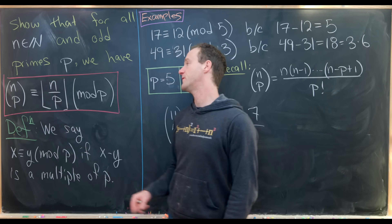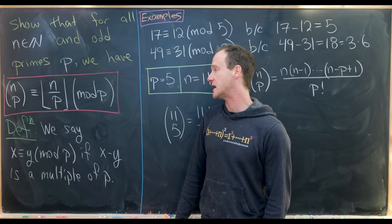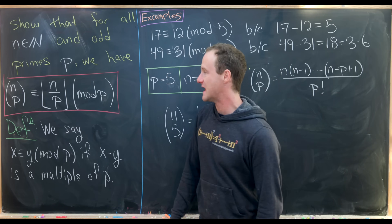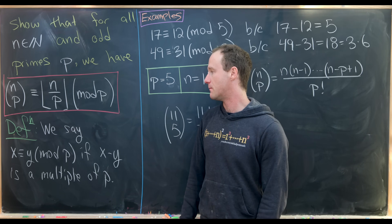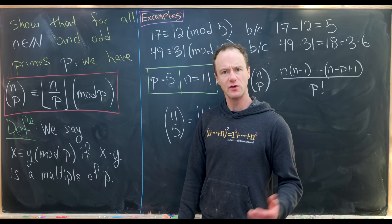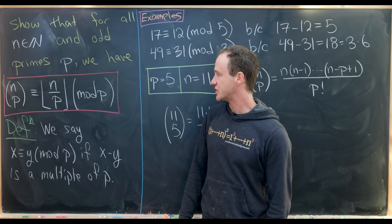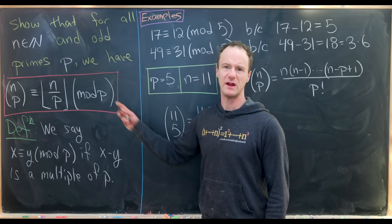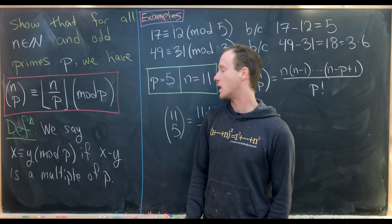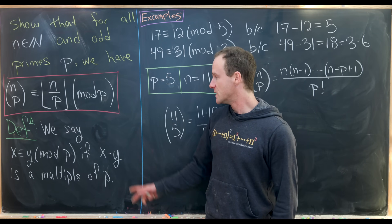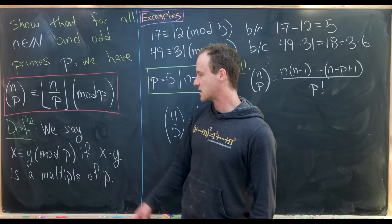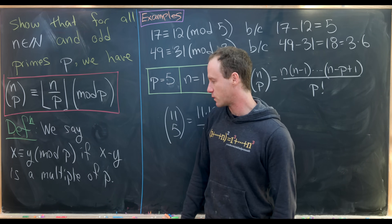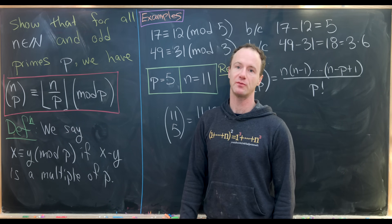The binomial coefficient n choose p is congruent to the floor of n divided by p, mod p. Let's recall the definition of congruence mod p — though it does not require a prime to talk about congruence mod whatever. We say that x is congruent to y mod p if x minus y is a multiple of p.